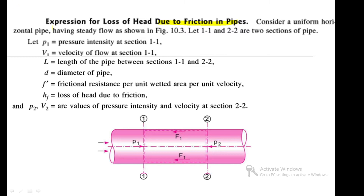Consider a uniform horizontal pipe having steady flow as shown in the figure. Let section 1-1 and section 2-2 be cross-sections of the pipe. Let P1 be the pressure intensity at section 1-1, V1 be the velocity of flow at section 1-1, L be the length of the pipe between sections 1-1 and 2-2, D be the diameter of the pipe, f' be the frictional resistance per unit wetted area per unit velocity, and HF be the loss of head due to friction.